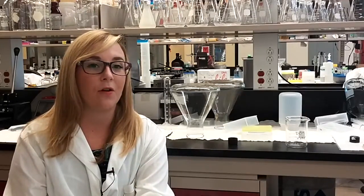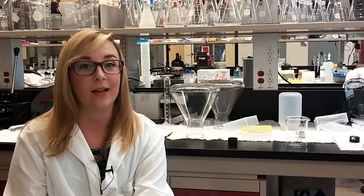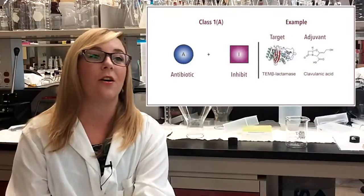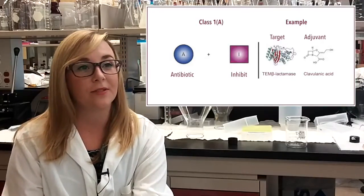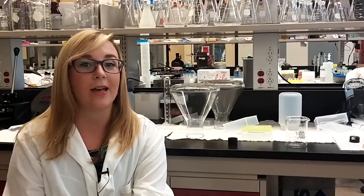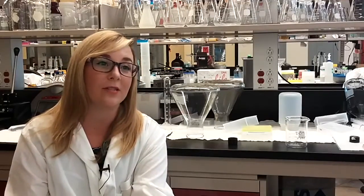But within this class 1 of molecules, this group can actually be further subdivided into two groups known as class 1a and class 1b. So class 1a actually target active resistance mechanisms, and often these resistance mechanisms are acquired, so the bacteria need to acquire a piece of genetic material to actually become resistant.